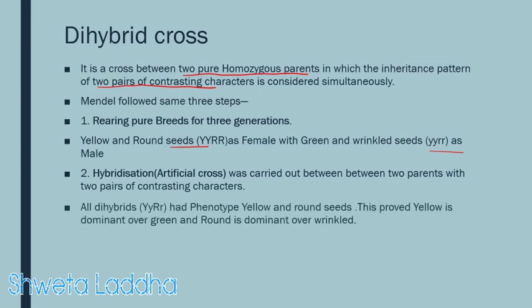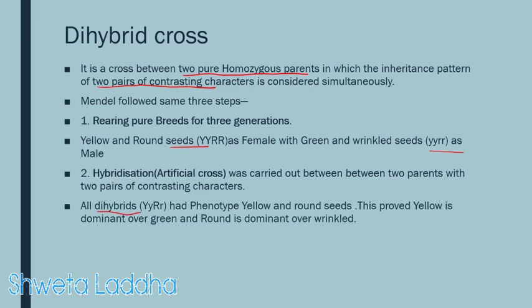As a result, he got in F1 generation all dihybrids. The phenotype of the dihybrids was yellow and round seeds, and they were dihybrid — capital Y, small y, capital R, small r. This proved that yellow and round seeds are dominant over green and wrinkled.